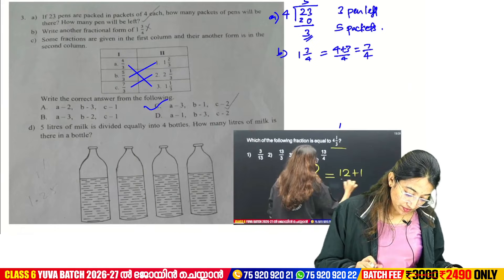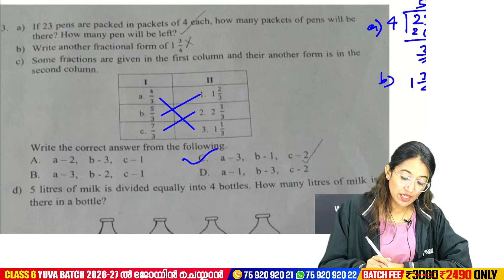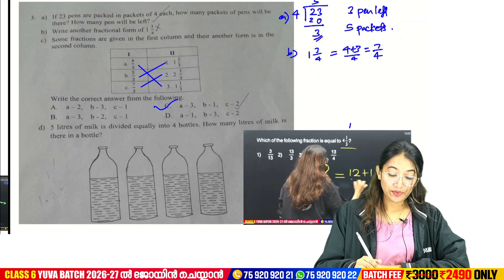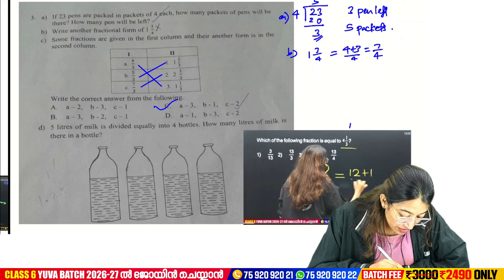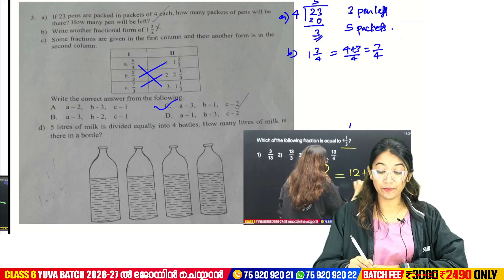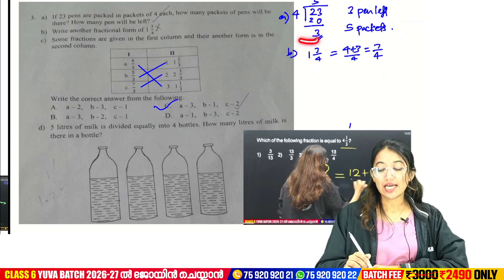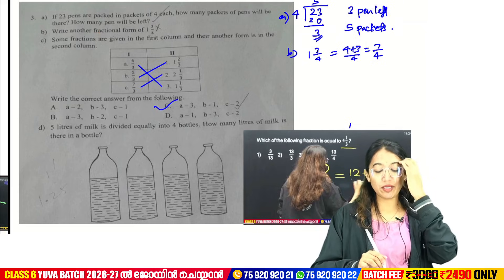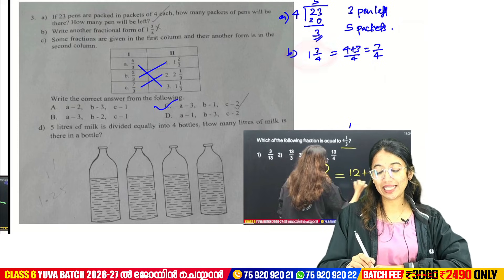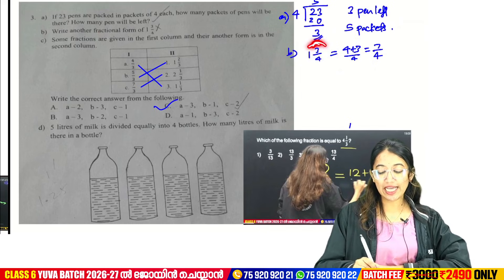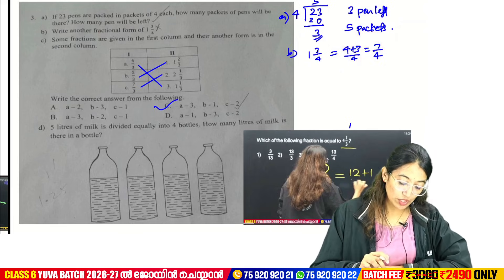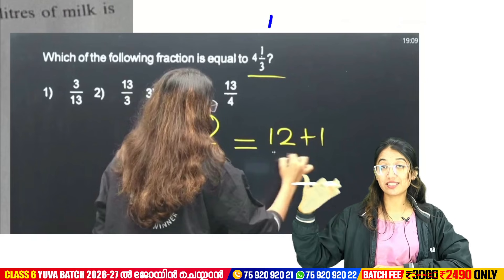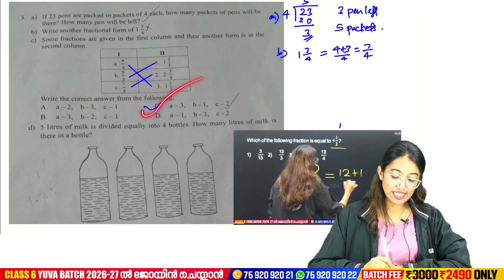Okay, this is the third question. If 23 pens are packed in packets of 4 each, how many packets will there be? How many pens will be left? If we divide 23 by 4, we get 5 remainder 3. That gives us the fraction 7 by 4, which is a mixed fraction and improper fraction. We are going to do the improper fraction. If you want option C, I am going to do the match the following.